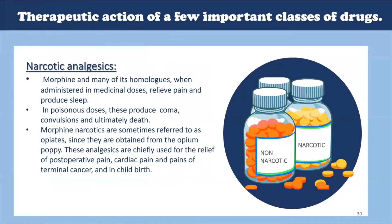On the other hand, opioids or narcotic analgesics are medications that mimic the activity of endorphins — substances produced by the body to control pain. They are available only by prescription. Opioids are used to treat acute pain related to surgery and other medical procedures, as well as for persistent or chronic and breakthrough pain that is moderate to severe. Persistent pain is usually treated with long-acting opioids that are released into the body slowly and control pain for longer periods of time. Opioids are sometimes taken in combination with non-opioids. Morphine and many of its homologues, when administered in medical doses, relieve pain and produce sleep.